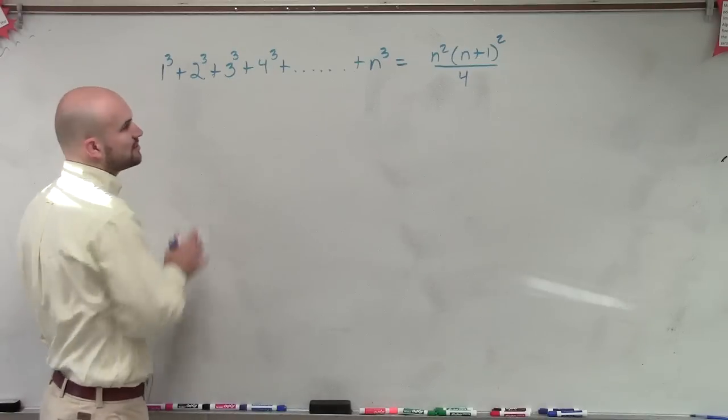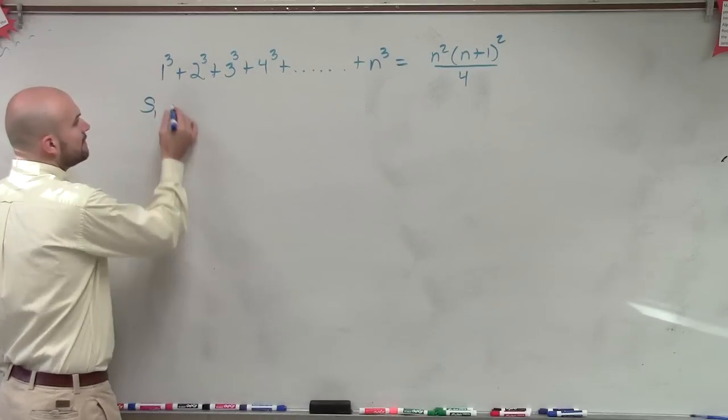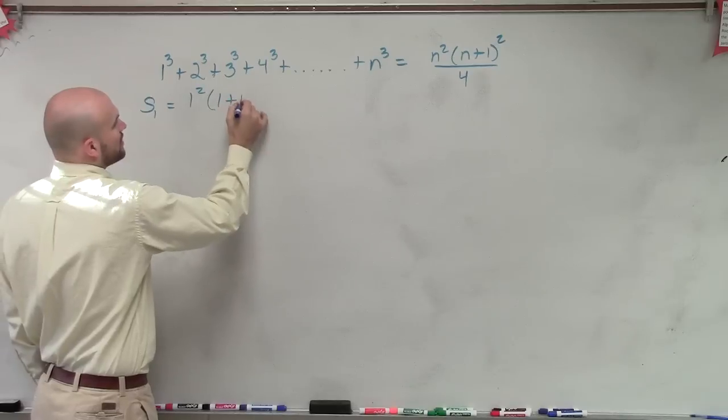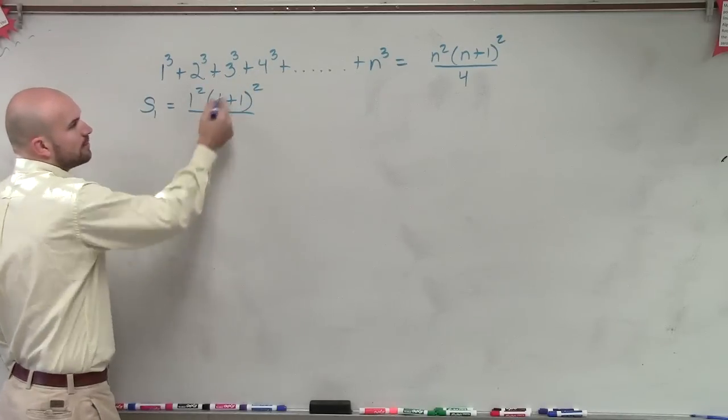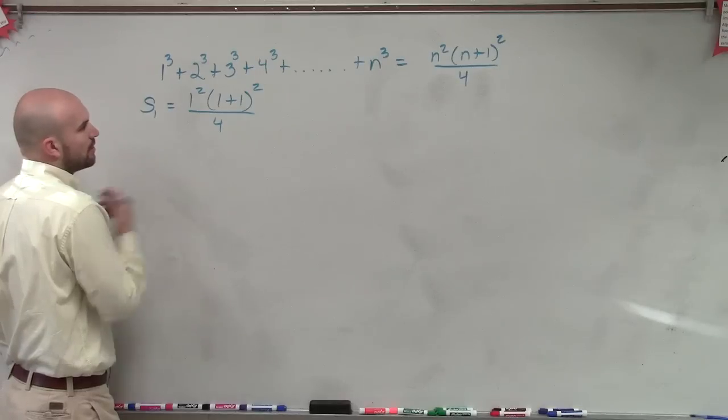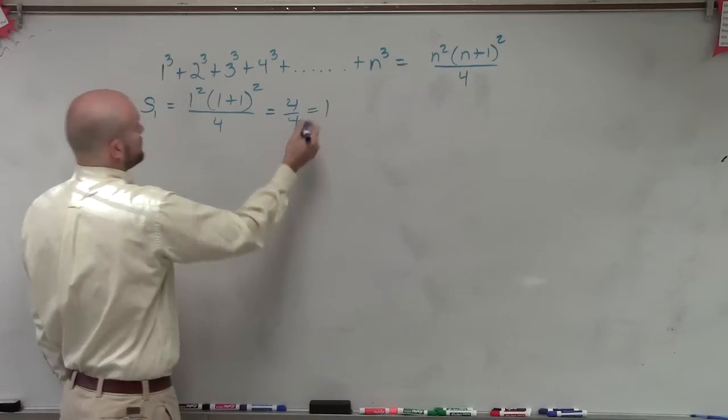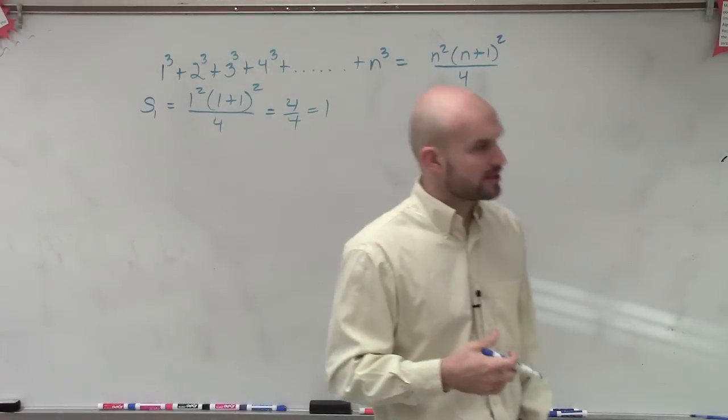First thing is we want to make sure that the sum works for our first term. So I take s(1), and I'm just going to plug in 1 for my first term. So I have 1²(1+1)²/4. Well, 1² is 1, 1+1 is 2, 2² is 4, 4÷4 = 1. And you can see 1³ would be our sum. So the sum for the first term works, right?